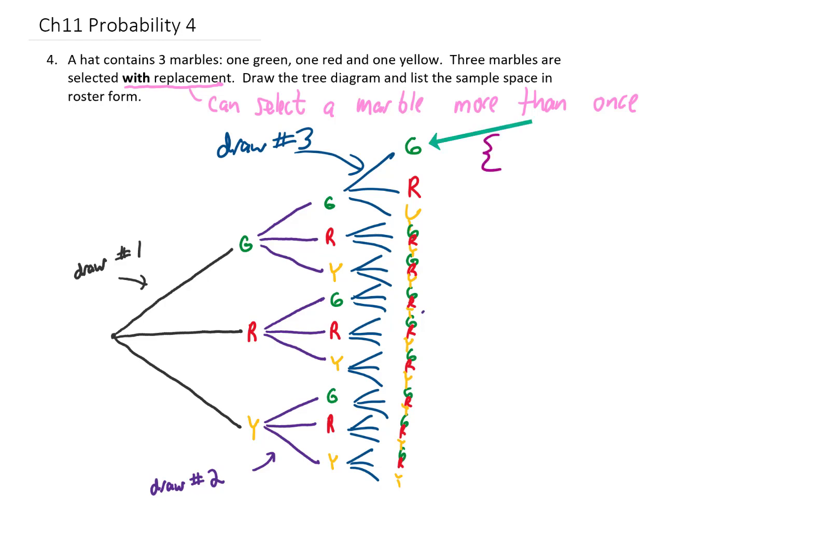If we start from the top here, and trace each one of these third draws back to our first draw, that's going to allow us to write our sample space out. So for example, if we start with this green here, and trace it back, we notice that our second draw was green, and also our first draw was green. That gives us the point GGG in our sample space.